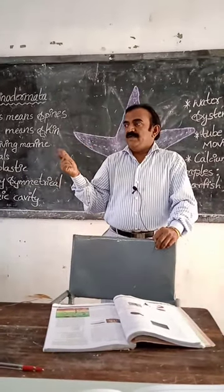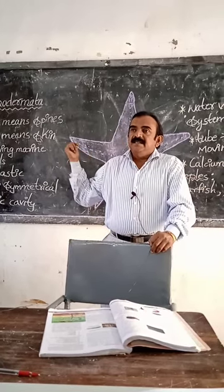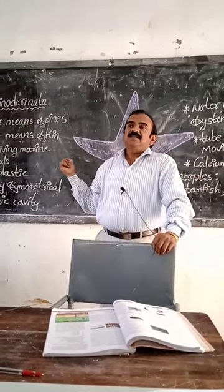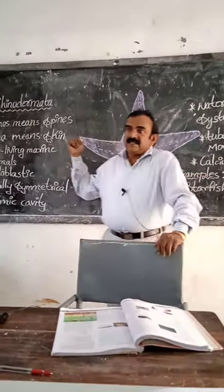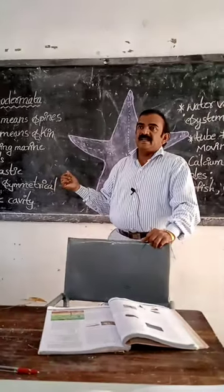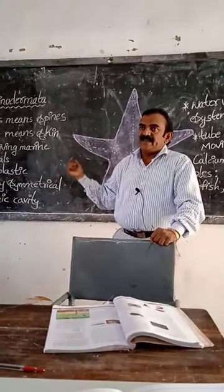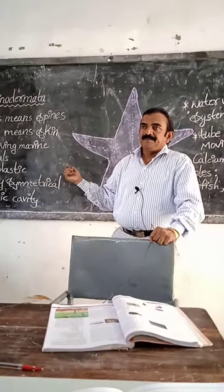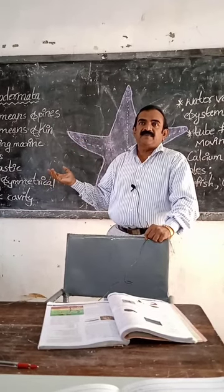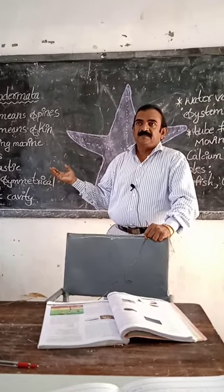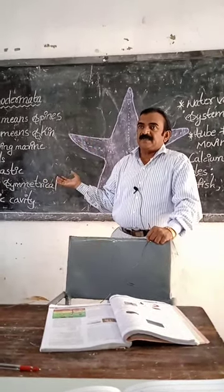This is from unit 5, page number 64 — Echinodermata. These animals are free-living and triploblastic. Coelomic cavity is present, they show radial symmetry, and a water vascular system is present for transportation.